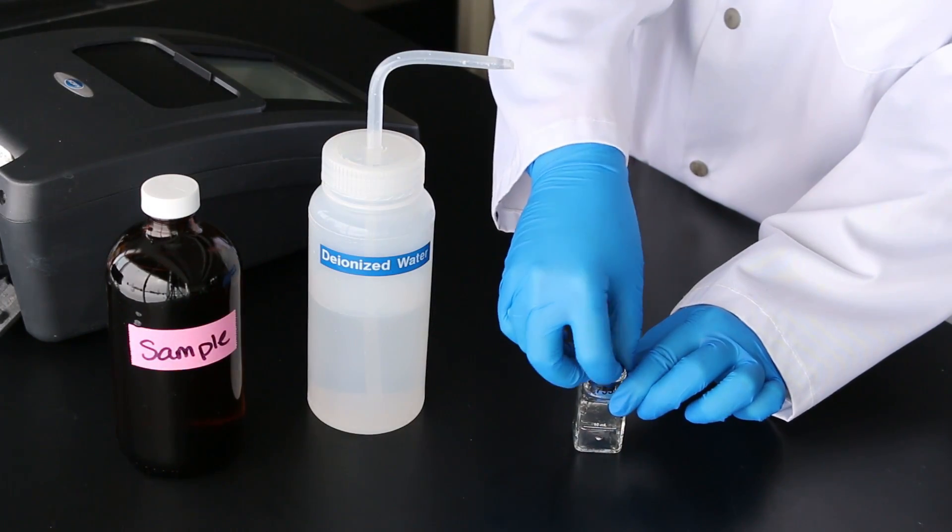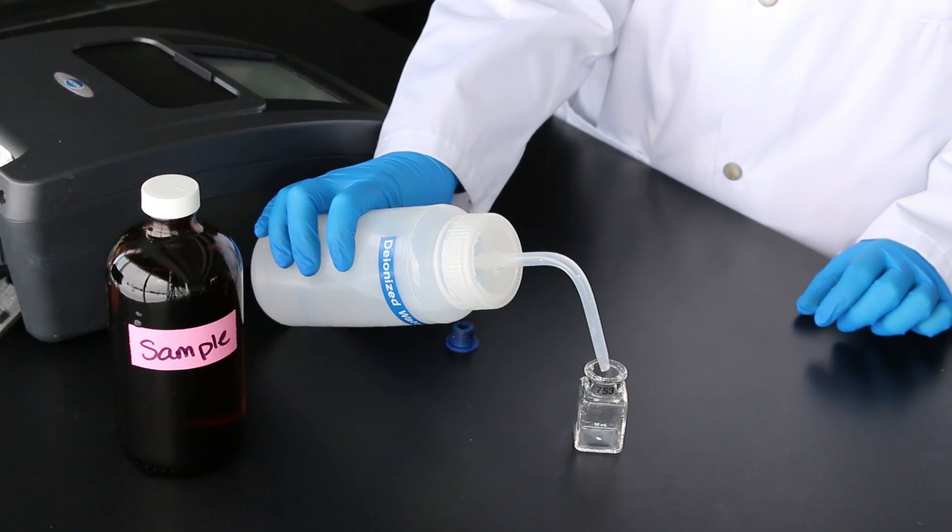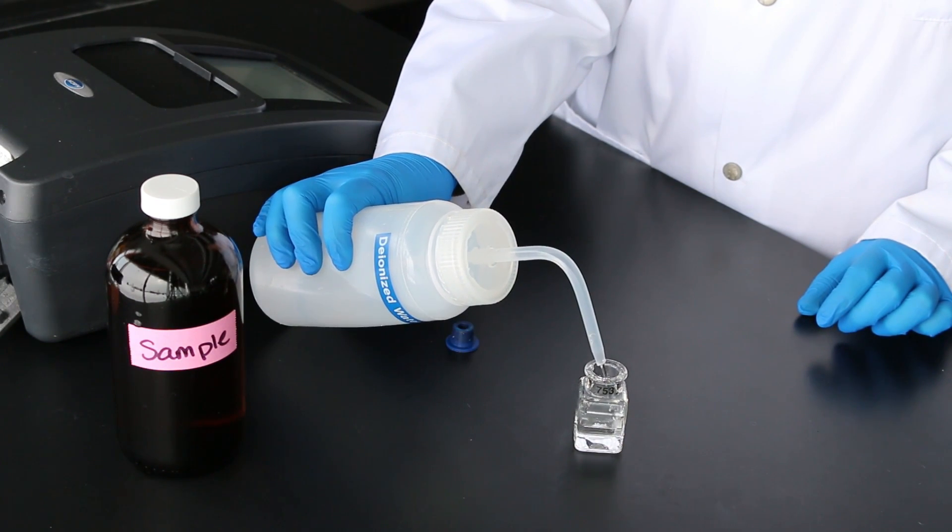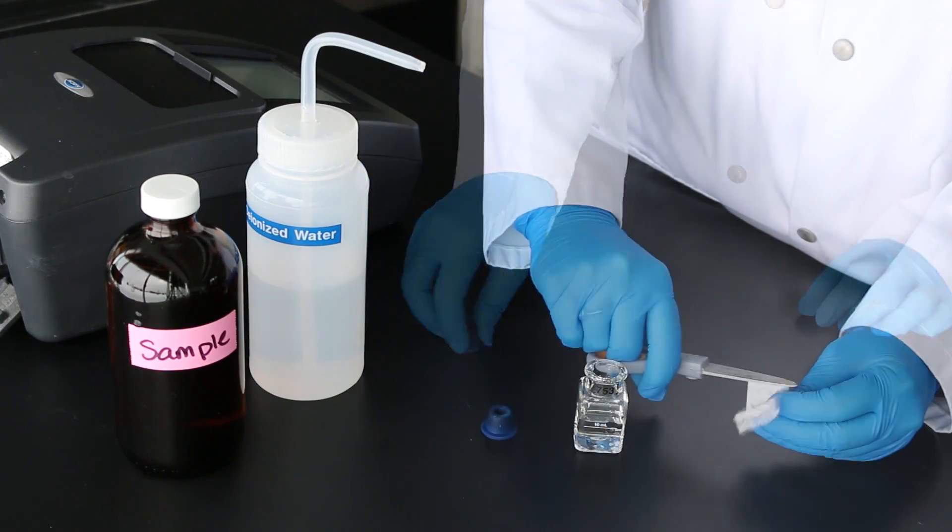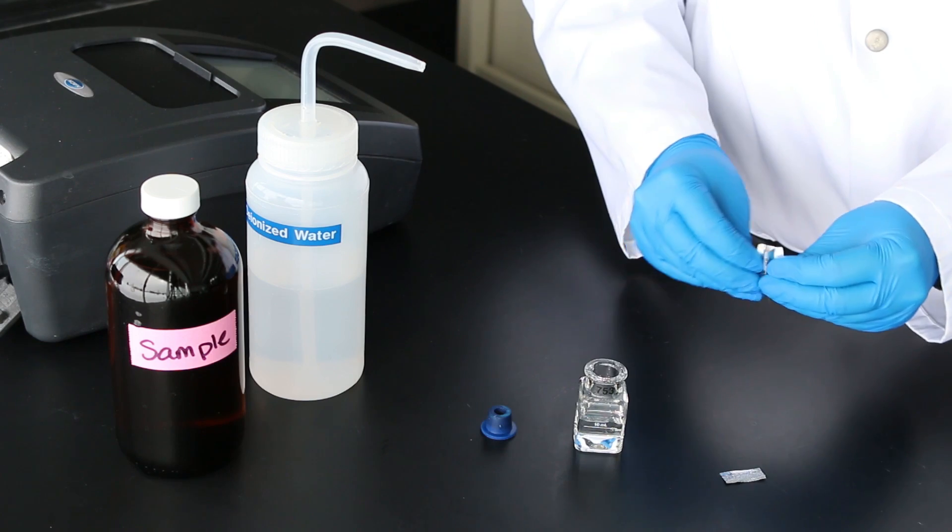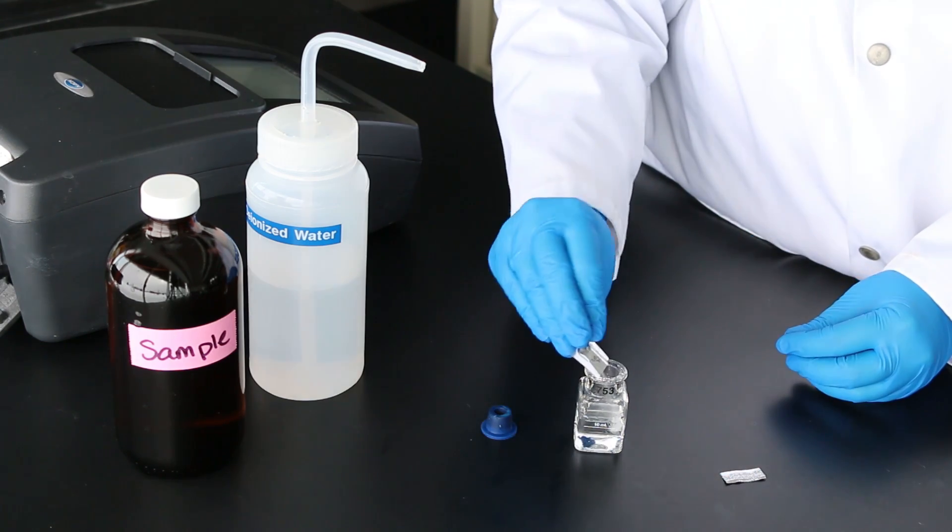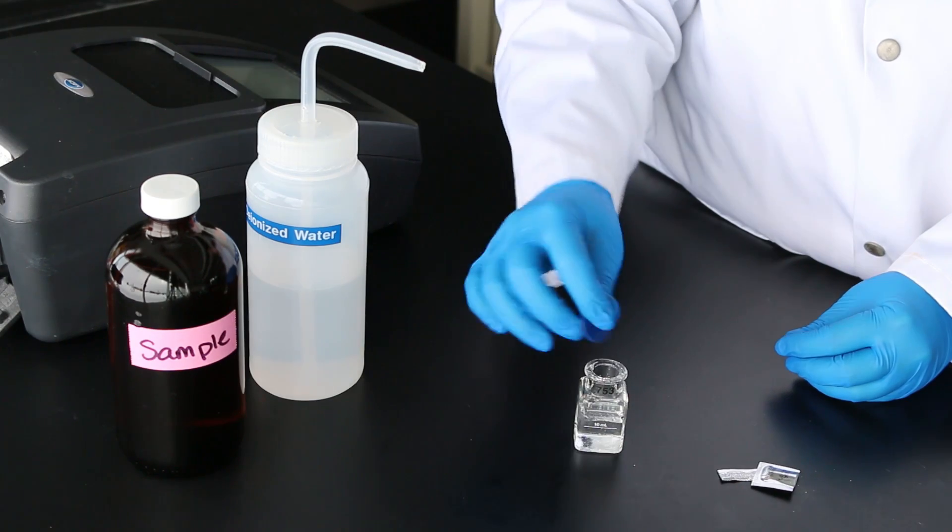As best practice, a reagent blank should be measured for each new lot of reagent. A reagent blank is completed by replacing the sample water with deionized water and following the same method for analysis. If a value is obtained, it can be subtracted from the sample results to minimize the interference caused by the reagent.